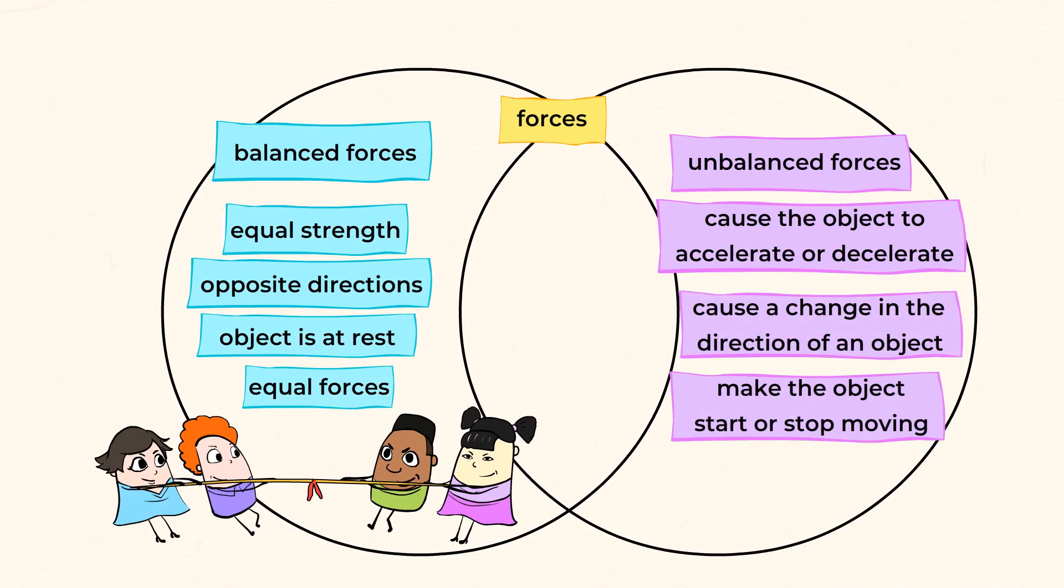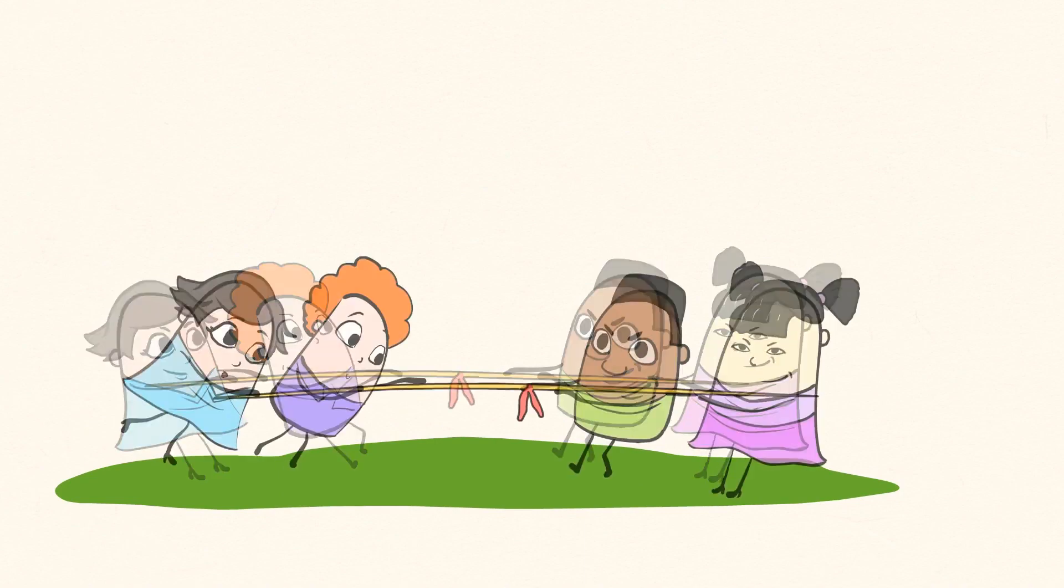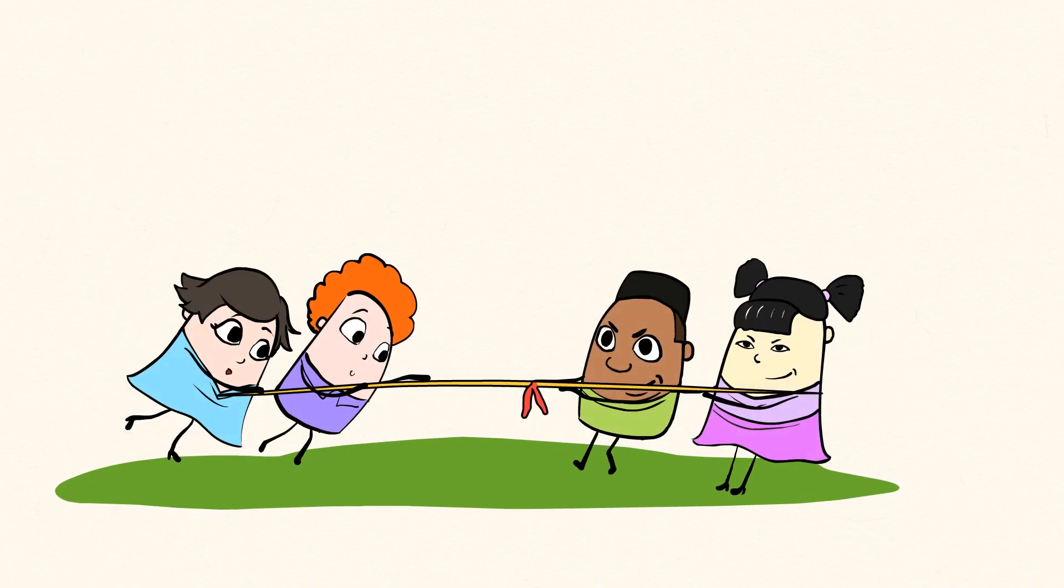Let's think about the tug-of-war again. One of the teams wins because they pulled the rope with more force than the other team. In other words, unbalanced force was applied.